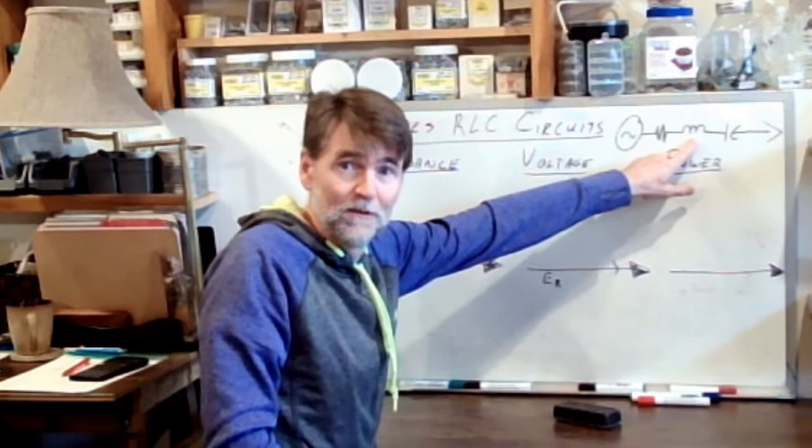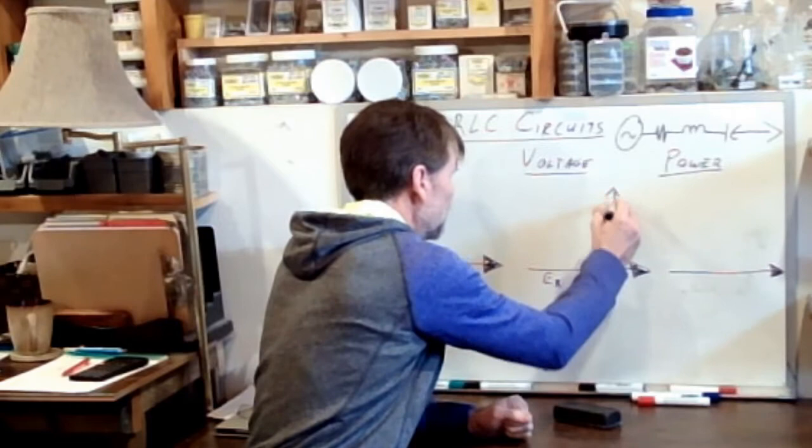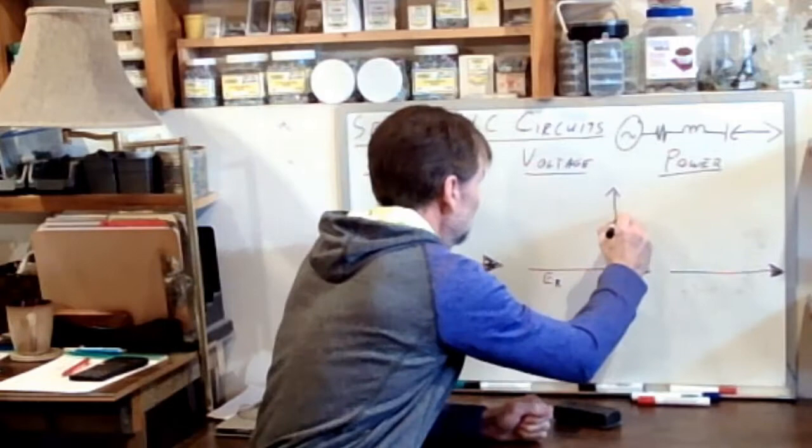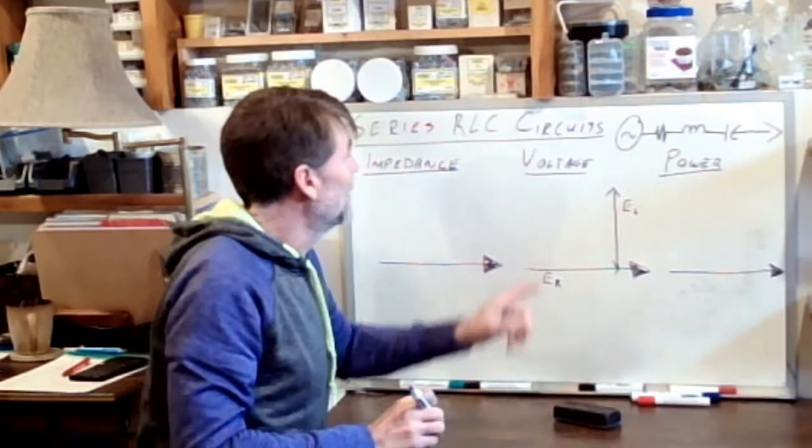Now we look at Eli, the Iceman. The voltage dropped across the inductor. The voltage is going to lead the current. So we're going to see the voltage leading the current. All right. So there it is at 90 degrees. The voltage vector leading the current vector. EL. Again, exactly as it was in the series RL circuit.